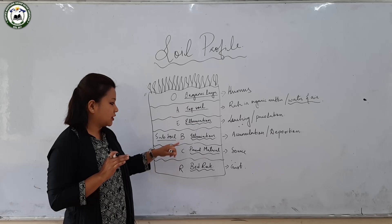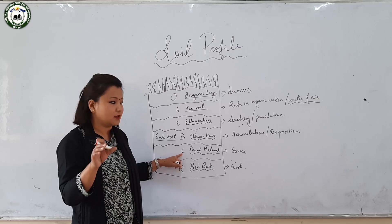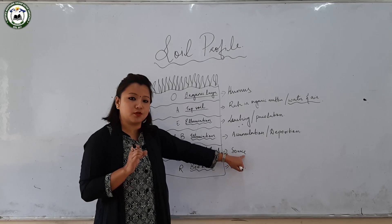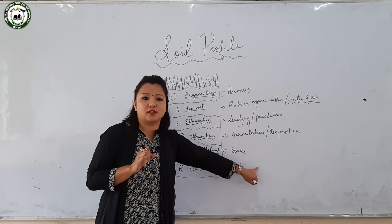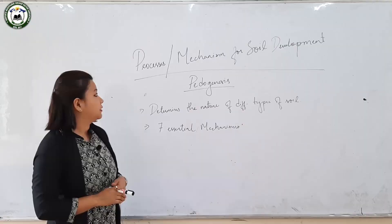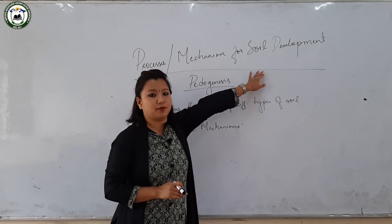Below the B horizon is the C horizon, which consists of the parent material or weathered rock materials, and is regarded as the source for soil formation. Below the C horizon is the R horizon, which consists of the bedrock or crustal part of the earth's layers.